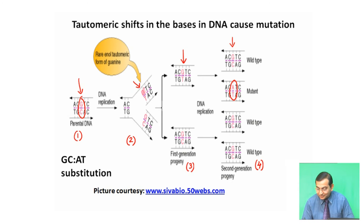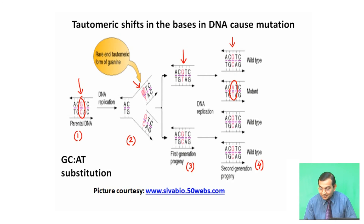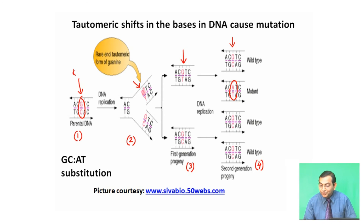In this figure, we can depict how changes of bases lead to mutation. In number one, the parental DNA shows the normal keto form of guanine present. This keto form changes to the less stable rare enol form — that is, the tautomeric shift occurs, as shown in number two.